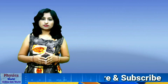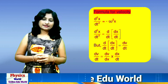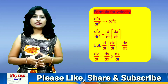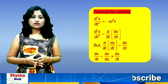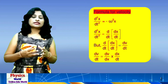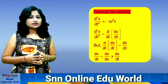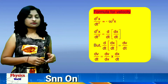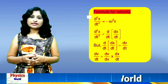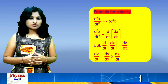Now let us start for the velocity. For velocity, we are using this acceleration equation: d²x/dt² = -ω²x. Now we separate this. Let us start with this derivation. Here we are initially starting with this acceleration expression.